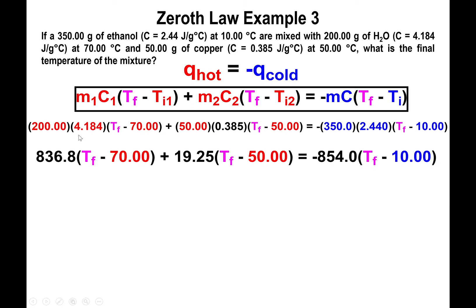What's going to happen right now is that the easiest thing to do in this problem is to multiply the two numbers outside of the change in temperature. So the 200 by 4.184, multiply those two numbers. The 50 multiplied by the 0.385, carrying on that multiplication. The negative 350 and the 2.44, multiply those numbers together. And you'll end up with the following semi-simplified version of the equation: 836.8 times (T_f - 70) plus 19.25 times (T_f - 50) being equal to negative 854 times (T_f - 10) degrees Celsius.